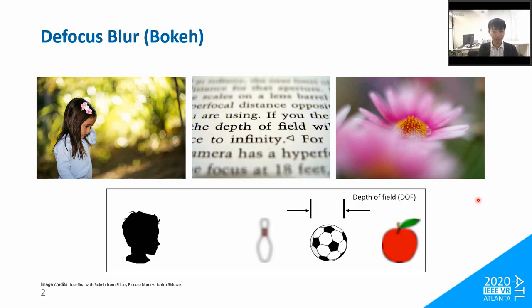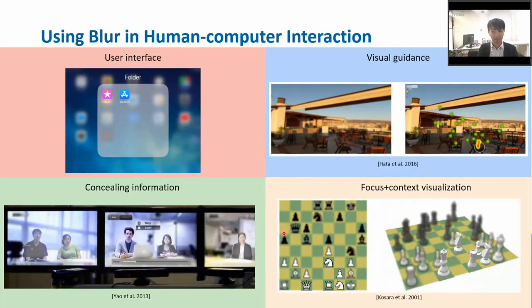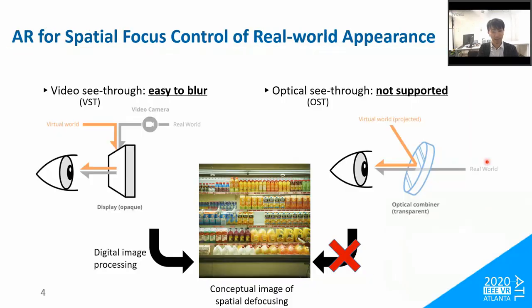People can visually perceive fine details of an object in their depth of field. In addition, the blur effect enables a wide range of fundamental human-computer interaction techniques, such as user interface in mobile phones, visual guidance to draw users' attention to real-world objects, concealing undesired visual information for privacy protection, and focus and context visualization. These interaction techniques are essential in augmented reality AR applications.